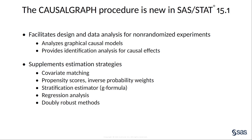After you have specified a causal graph that you believe accurately reflects the experiment you wish to analyze, the CausalGraph procedure can find a statistical strategy that you can use to obtain a causal effect estimate that has a valid causal interpretation. These estimation strategies are compatible with many standard approaches, including those listed here.